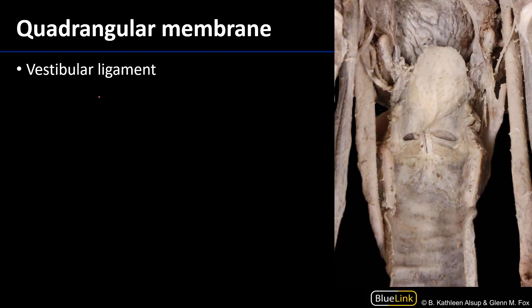The intrinsic laryngeal membranes are one of two. Superiorly we have the quadrangular membranes — there is a left and a right quadrangular membrane — and inferiorly we have the conus elasticus.